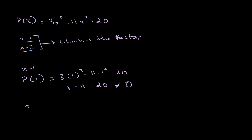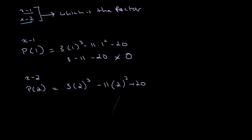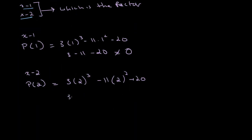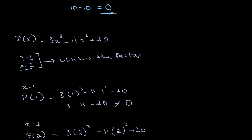Now let's see with x minus 2. We simply plug in p of 2, and this gives us 3 times 2 cubed minus 11 times 2 squared plus 20. That is 3 times 8 minus 11 times 4 plus 20, which is 24 minus 44 plus 20, and this is equal to 0. Therefore, we can say that x minus 2 is a factor, meaning that when we divide it, there will be absolutely no remainder.